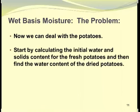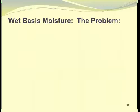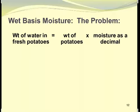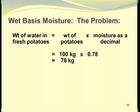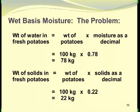Now we can deal with the potatoes. We start by calculating the initial water and solids content for the fresh potatoes and then find the water content of the dried potatoes. The weight of water in the fresh potatoes is 100 kilograms times 0.78, giving 78 kilograms of water. The weight of solids is 100 kilograms times 0.22, giving 22 kilograms of solids.